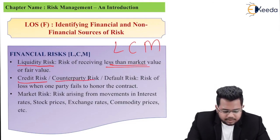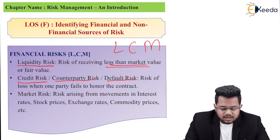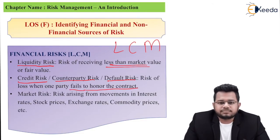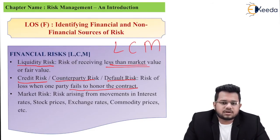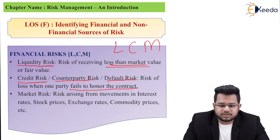Then credit risk, also called counterparty risk or default risk. This is basically the risk of loss when one party fails to honor the contract. For example, if the lender is a bank and the borrower is a customer and that customer has not paid back the money, then that is known as credit risk, counterparty risk, or default risk.